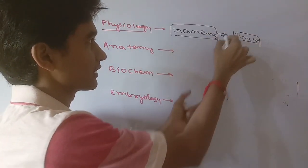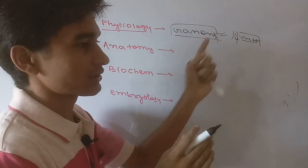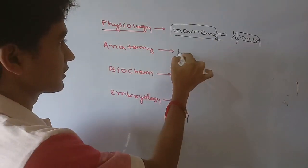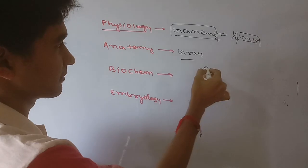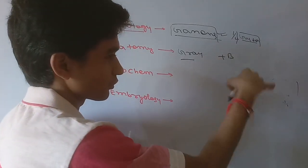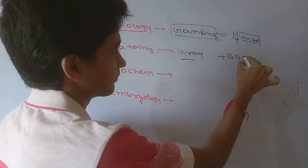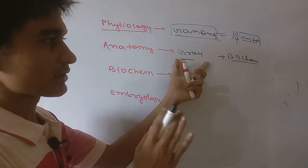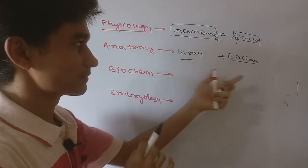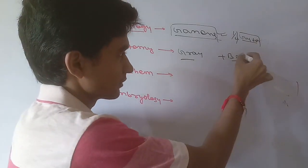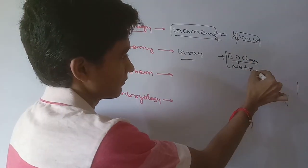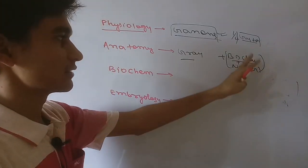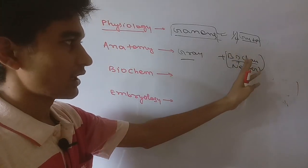For anatomy, the best book is Gray's Anatomy, but many students prefer BD Chaurasia, as we and all students also prefer. BD Chaurasia is good. Gray's diagrams are very good, but if you study BD Chaurasia along with Netter, this is also the best.